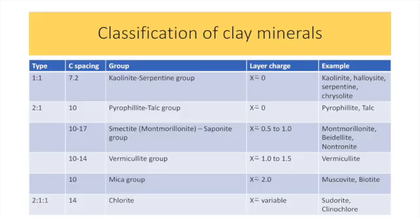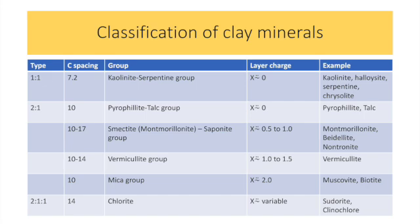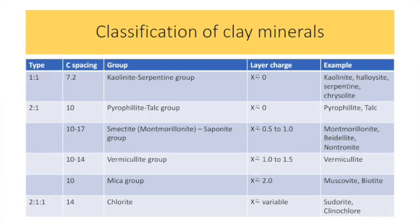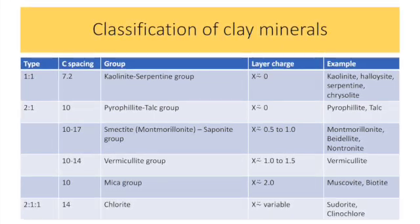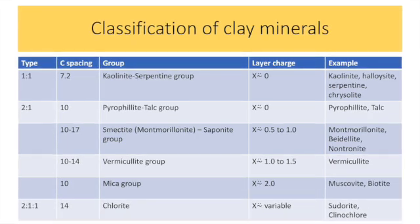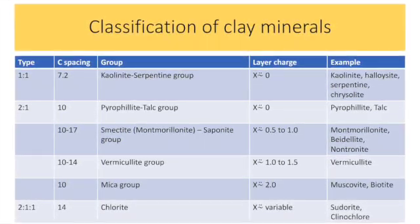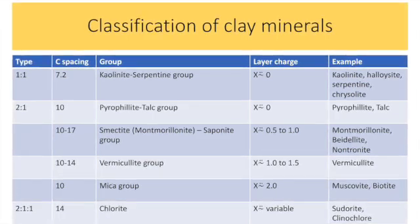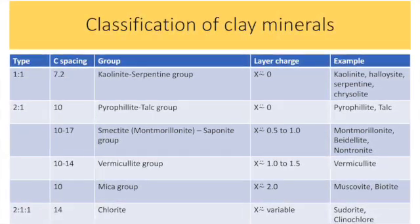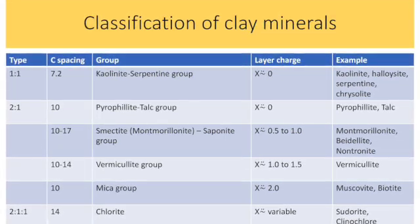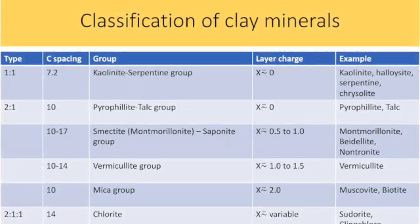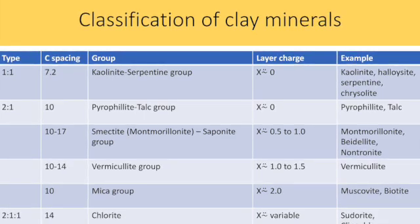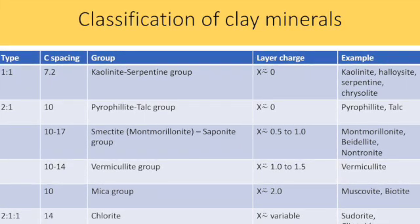Layer silicate clays are classified into 1:1, 2:1, and 2:1:1 types. The 1:1 type, also known as the kaolinite-serpentine group, consists of kaolinite, halloysite, serpentine and chrysotile. The 2:1 group is further subdivided into the pyrophyllite-talc group, smectite-saponite group, vermiculite group and mica group. The pyrophyllite-talc group has pyrophyllite and talc as end members. The smectite-saponite group has montmorillonite, beidellite and nontronite as members. The vermiculite group has vermiculite, and the mica group has muscovite and biotite as members.